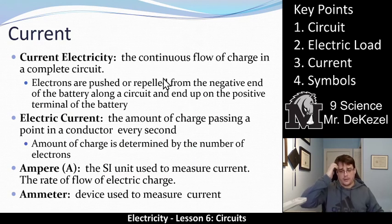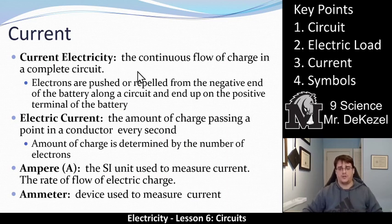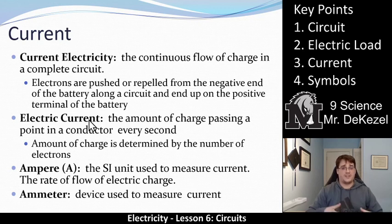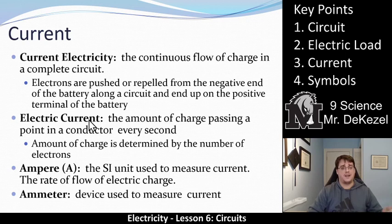Current electricity is another big concept — we talked about voltage last time. Current electricity is the continuous flow of charge in a complete circuit. Electrons are pushed or repelled from the negative end of the battery along the circuit and end up at the positive end. When we talk about current, we talk about how much charge is passing a point every second. If the wire is really large, you can generally have a lot more current — more electrons or charge passing that point every second. When a wire is tiny, it is often harder for current to move through it, so you get less current.